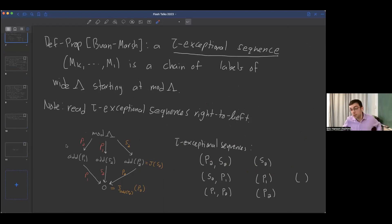Bethany already gave the definition of a tau exceptional sequence, but what I'm calling a definition proposition, since it's not the original definition, is that a tau exceptional sequence, I index mine right to left rather than left to right, is a chain of these labels of the poset wide lambda which start at the top. Just a note for emphasis: we're reading tau exceptional sequences right to left. So M1 is the thing that comes first in my notation.